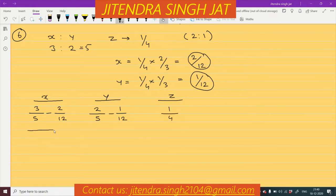Let us calculate. 12, 5, 60. 5, 2, 10. 12, 3, 36. So, 36 minus 10, 26 by 60.